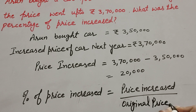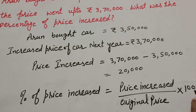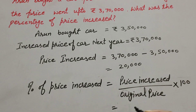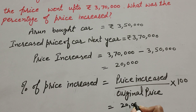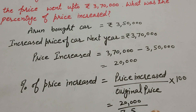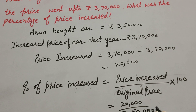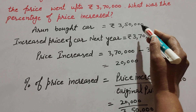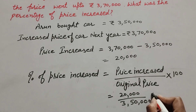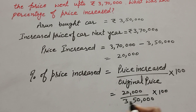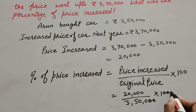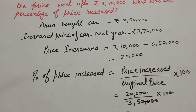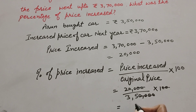So price increased is 20,000 over original price of car 3 lakh 50,000 — this is the original price when Arun bought the car — multiplied by 100. The two zeros in the denominator and numerator cancel out, giving us 200 over 35.